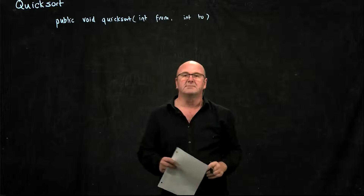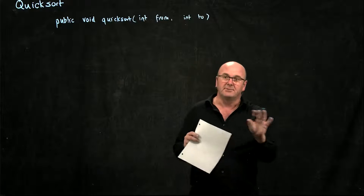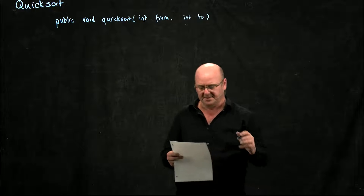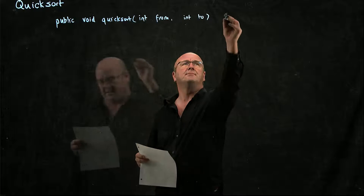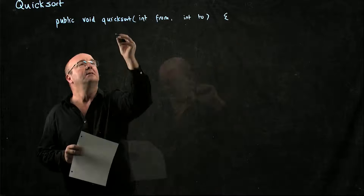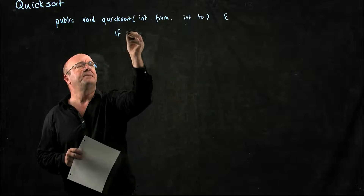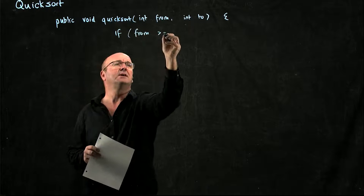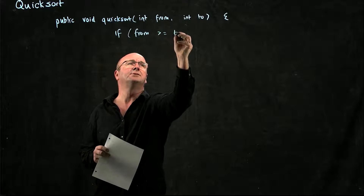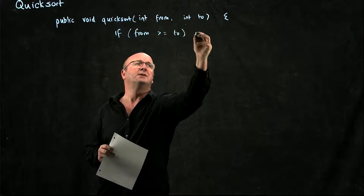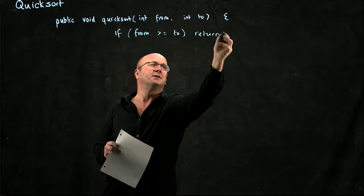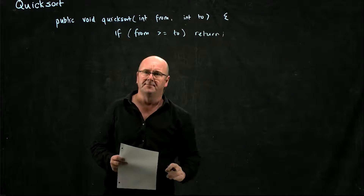And that's the region of the array that we have to sort. So if `from` is greater than or equal to `to`, we're done — we can just return and we're out of there.